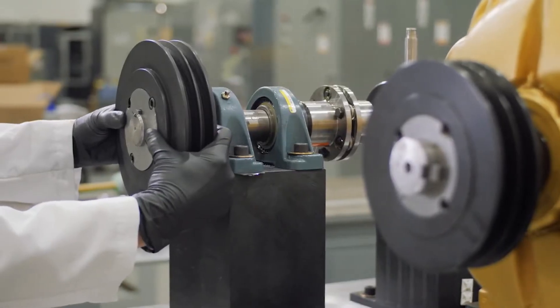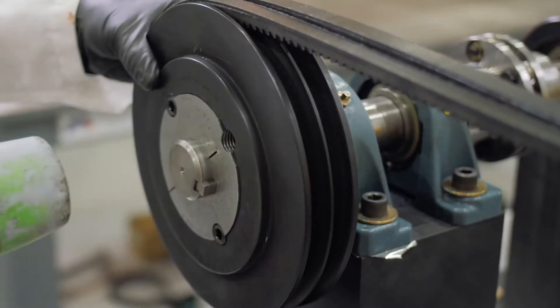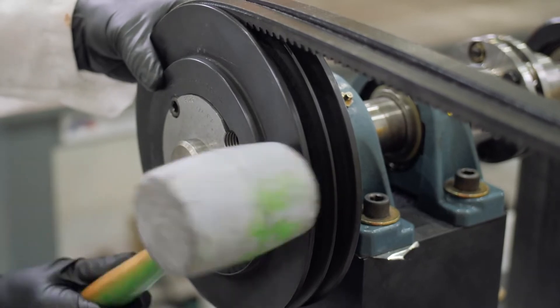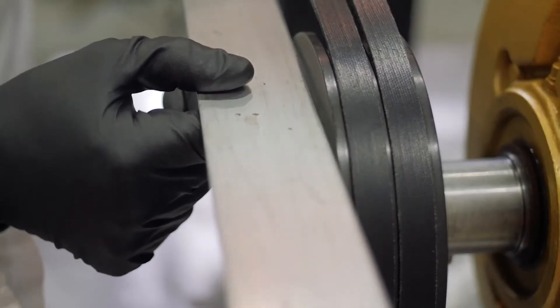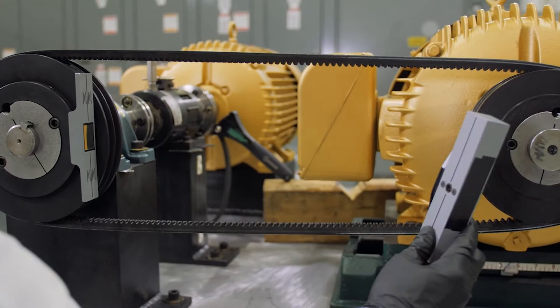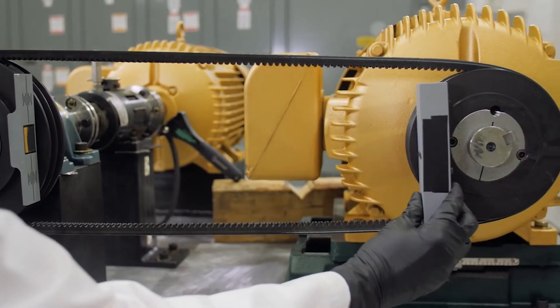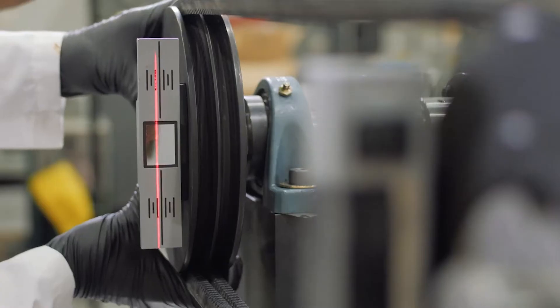After installation and alignment of the shivs, it is time to tension the belt or belts. For guidance on the installation and alignment of shivs or synchronous sprockets, please refer to Dodge's belt drive installation and alignment videos.